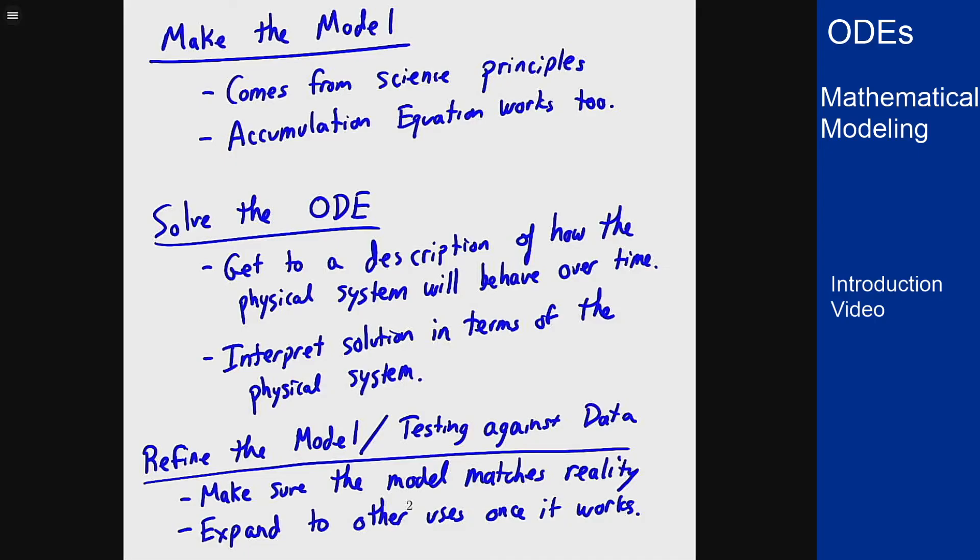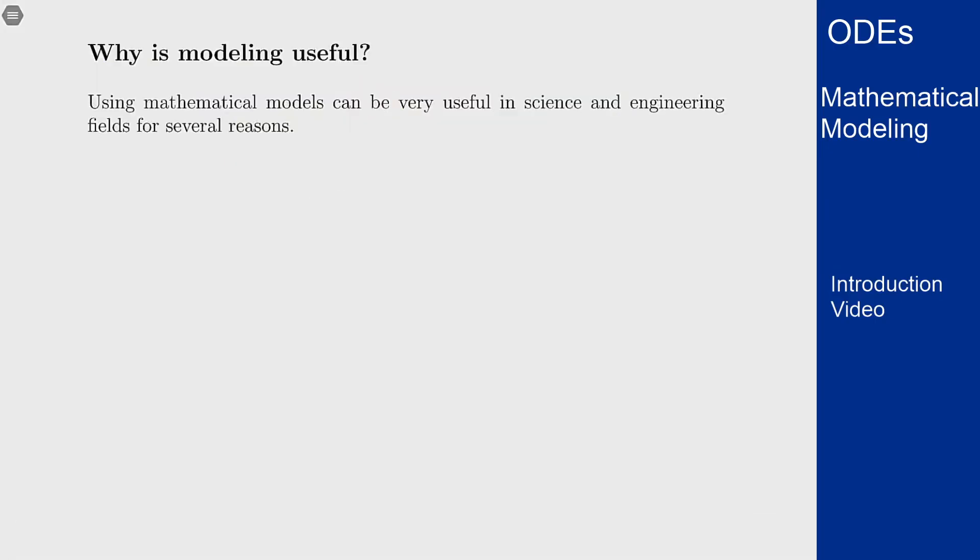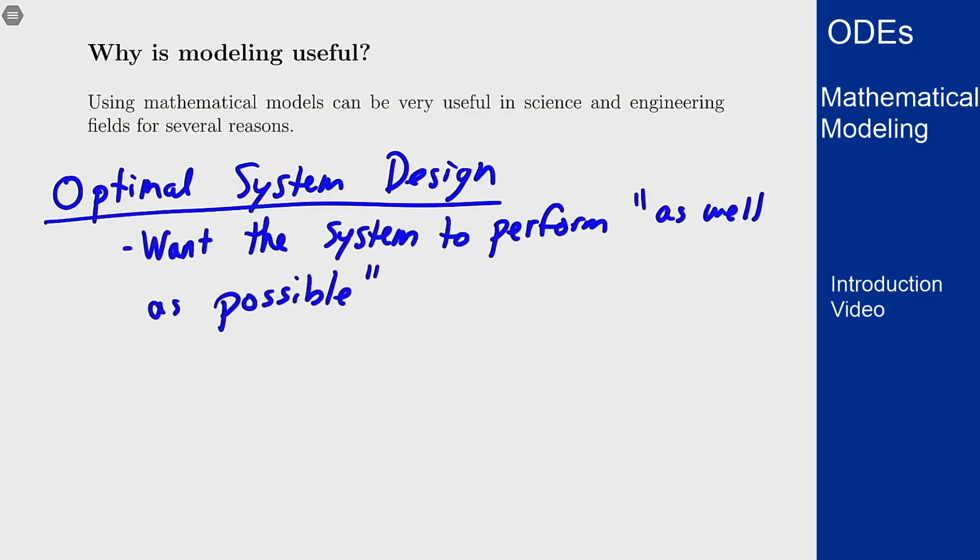How are these things useful? There are two main reasons that come to mind. The first is in optimal system design. The idea here is basically I want a certain physical system to perform as well as possible for some definition of well, usually a minimization of cost or something like that. What these models allow us to do is write a differential equation to model this system and then we can figure out what can I do to make this differential equation give me the best solution I could possibly get out of the physical system.